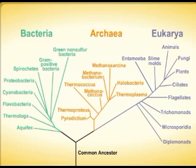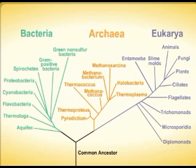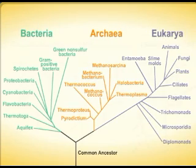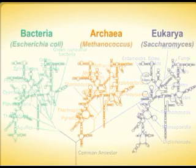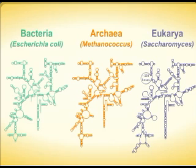Living organisms are divided into three major groups: the bacteria, the archaea, and the eukarya. The establishment and organization of these groups, called domains, is based on comparisons of nucleotide sequences of ribosomal RNA.